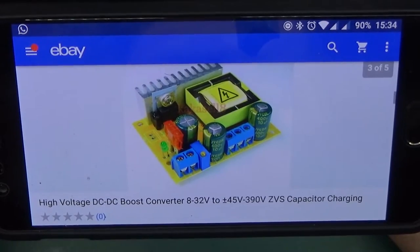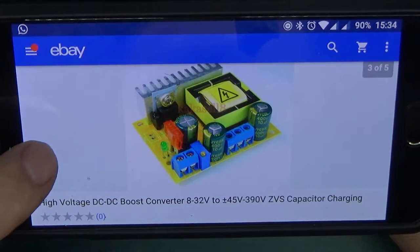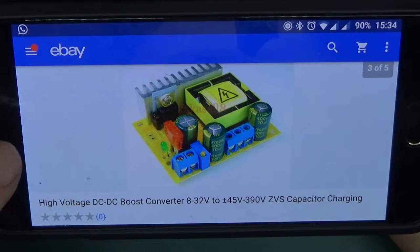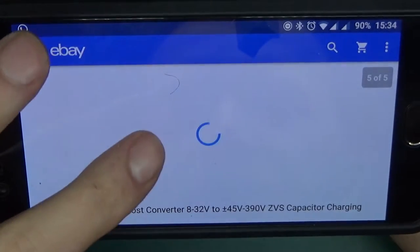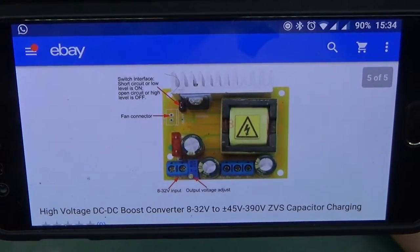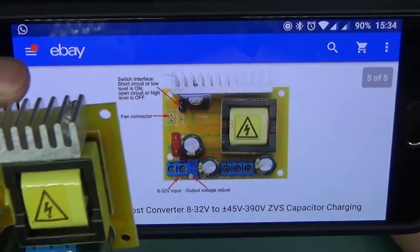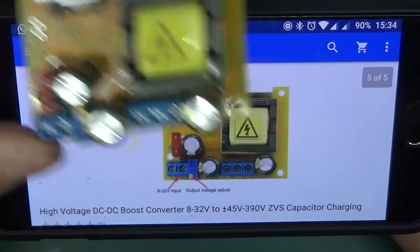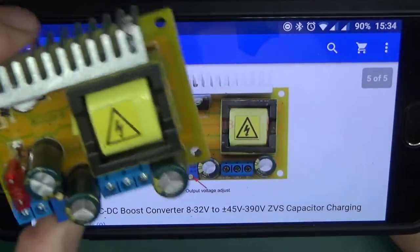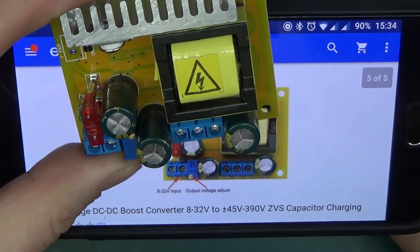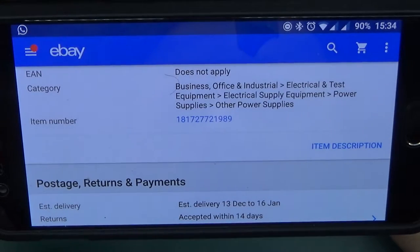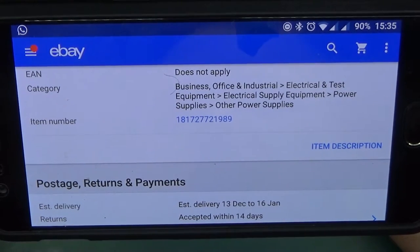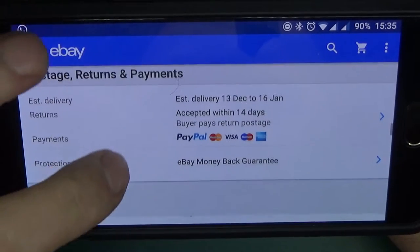And here it is on eBay. It's a high voltage DC to DC boost converter 8 to 32 volts to plus minus 45 to 390 volt ZVS capacitor charging. And it's got a number of pictures which looking at our module yeah it does correspond to what was sent to us. The potentiometer is backwards on the picture or on here but that's not an issue. Item number 181727721989 and if you're looking for this exact item just type in that number into eBay search box it will find you just this one.